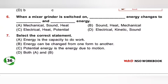Seventh one: Select the correct answer. Option A: Energy is the capacity to do work — this is correct. Option B: Energy can be changed from one form to another — also correct. Option C: Potential energy is the energy due to motion — this is incorrect. Potential energy is energy due to position, while kinetic energy is energy due to motion. Since both A and B are correct, Option D is the correct answer.